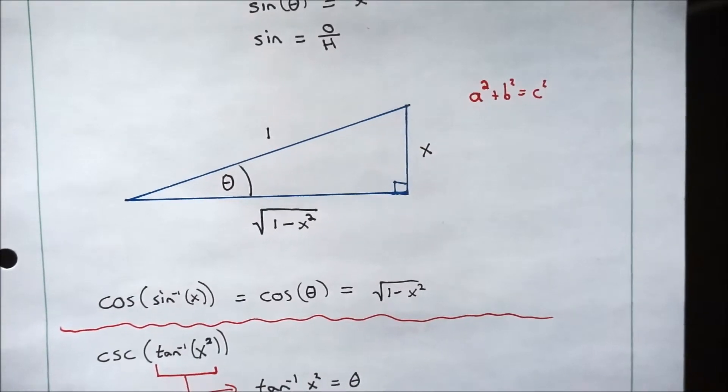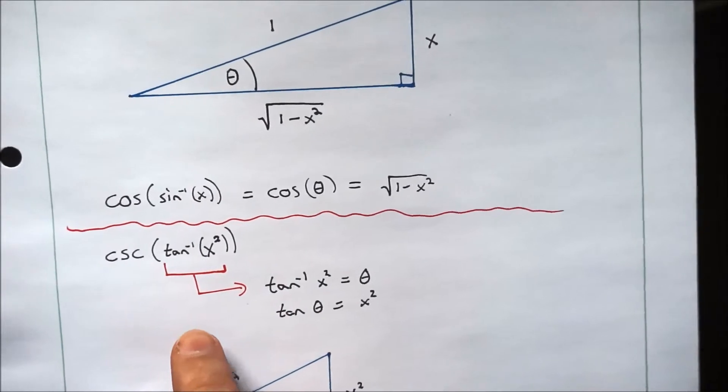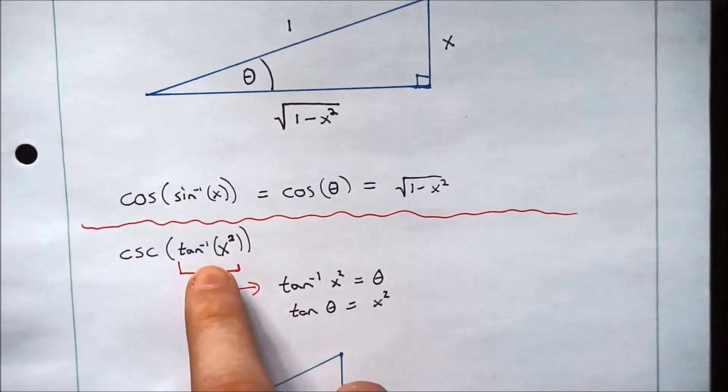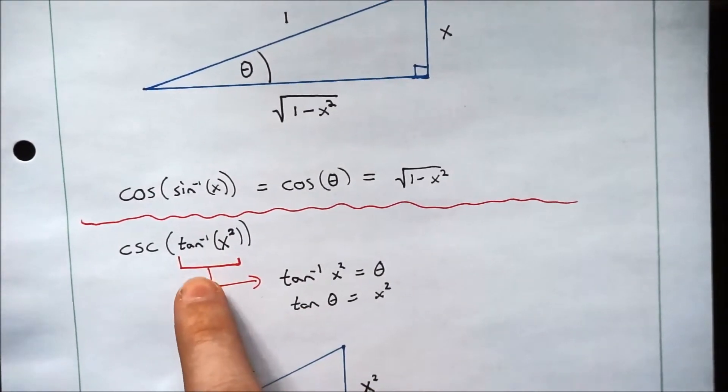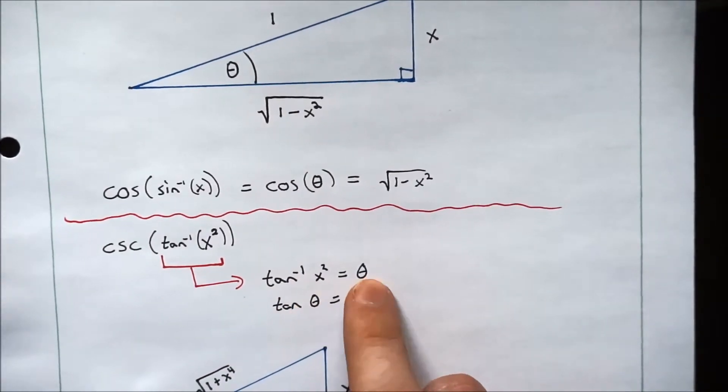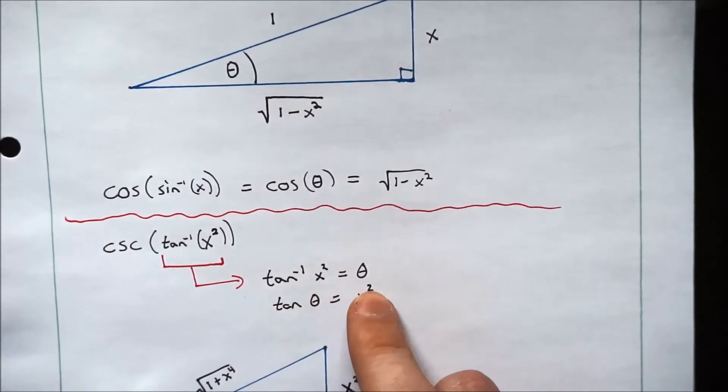Now let's look at another example. This one on the surface looks a little bit more complicated, but it's actually exactly the same thing. Here we have cosecant of the arc tangent of x squared. Now, same exact thing. We're going to take out what's in the brackets. We have the arc tangent of x squared equals theta. x squared doesn't matter.